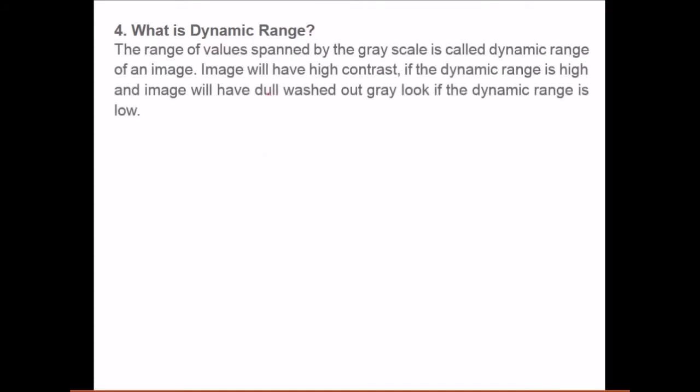Now what is dynamic range? The range of values defined by the grayscale is called the dynamic range of an image. So image will have high contrast if the dynamic range is high and image will have dull washed out gray look if the dynamic range is low. So say we have 0 to 255, 8 bit. This is the dynamic range. If we have only say 5 bit, so it would only be 0 to 2 to the power 5. Now that will be only 32, 0 to 32. This is the dynamic range.